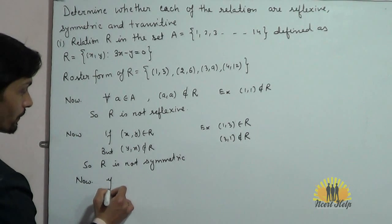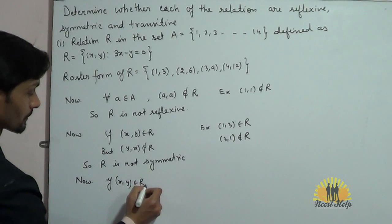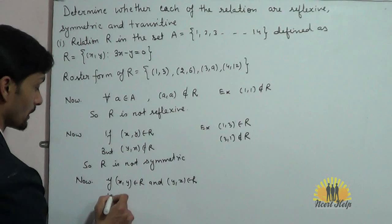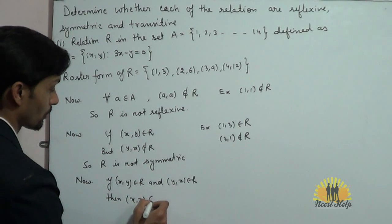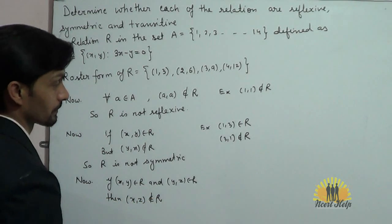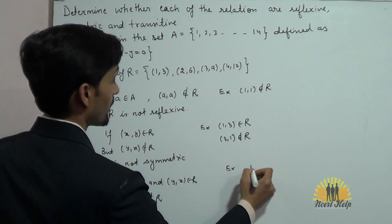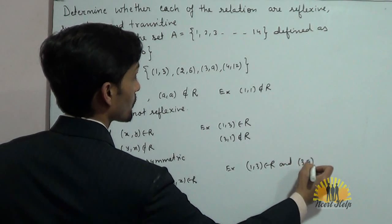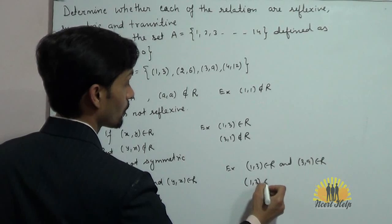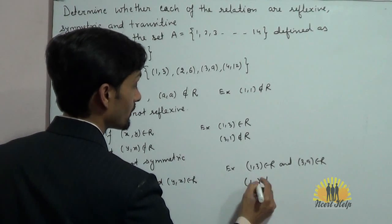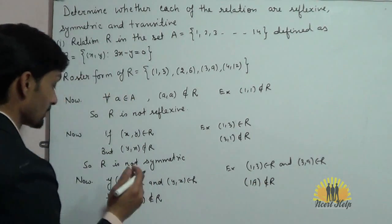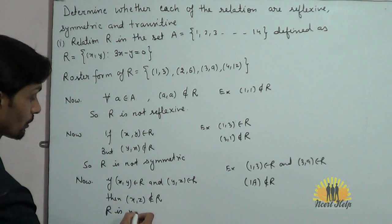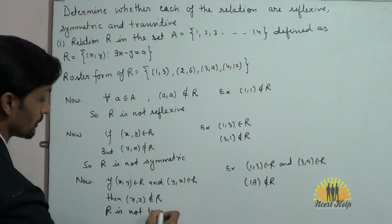Now, if (x, y) belongs to R and (y, z) belongs to R, then (x, z) does not belong to R. For example, we have (1, 3) belongs to R and (3, 9) belongs to R, but (1, 9) does not belong to R. It means the relation is not transitive.